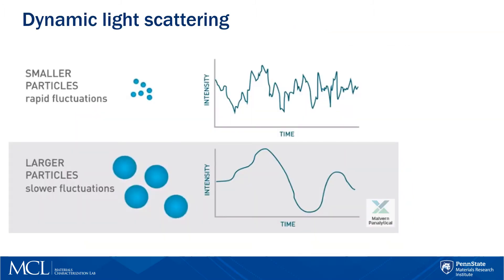As a result, we obtain plots showing intensity changes with time. We can see rapid fluctuations for smaller particles and slower fluctuations for larger particles.